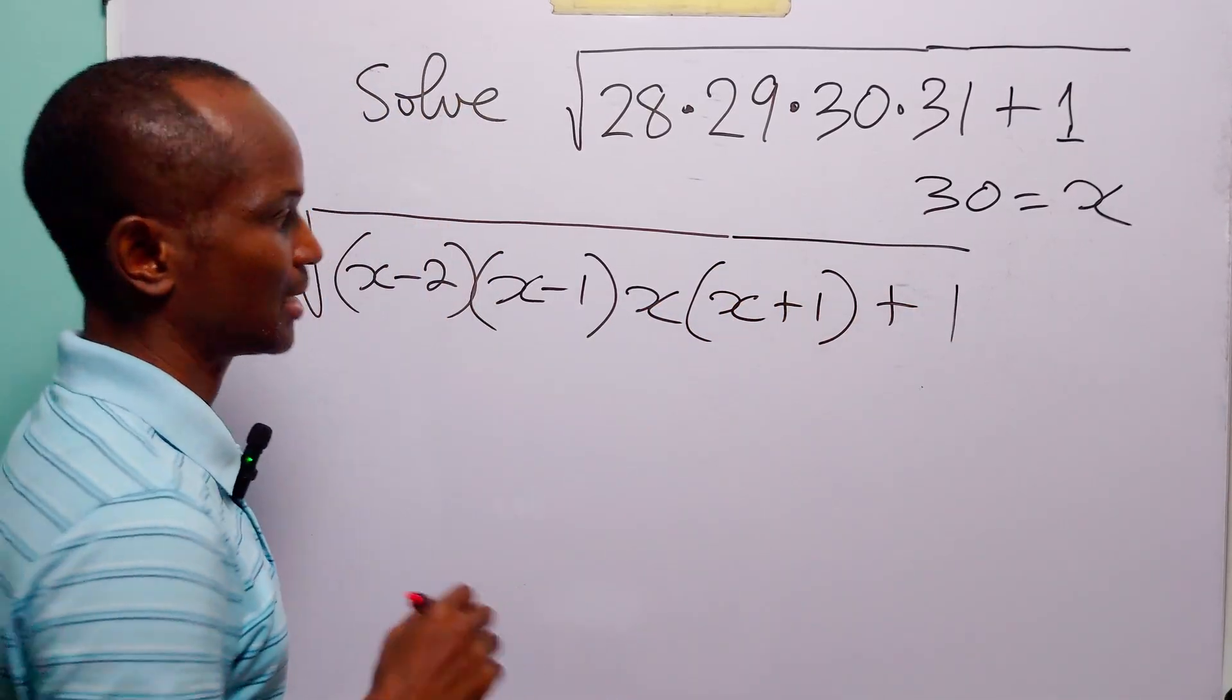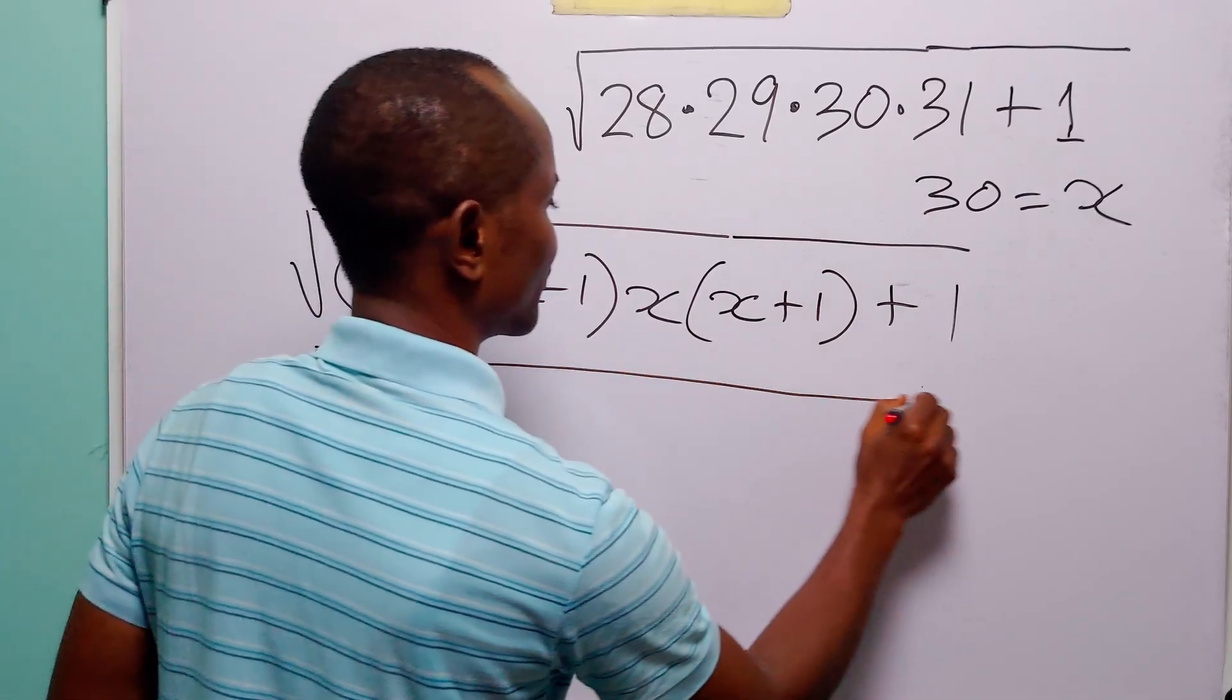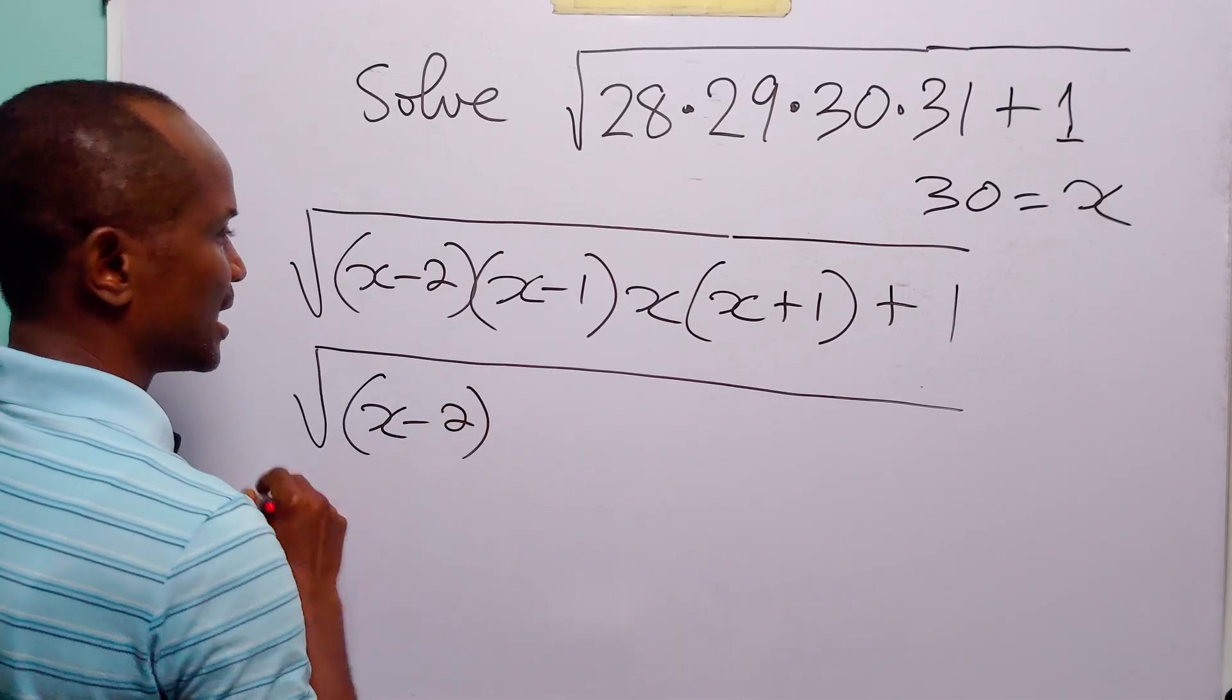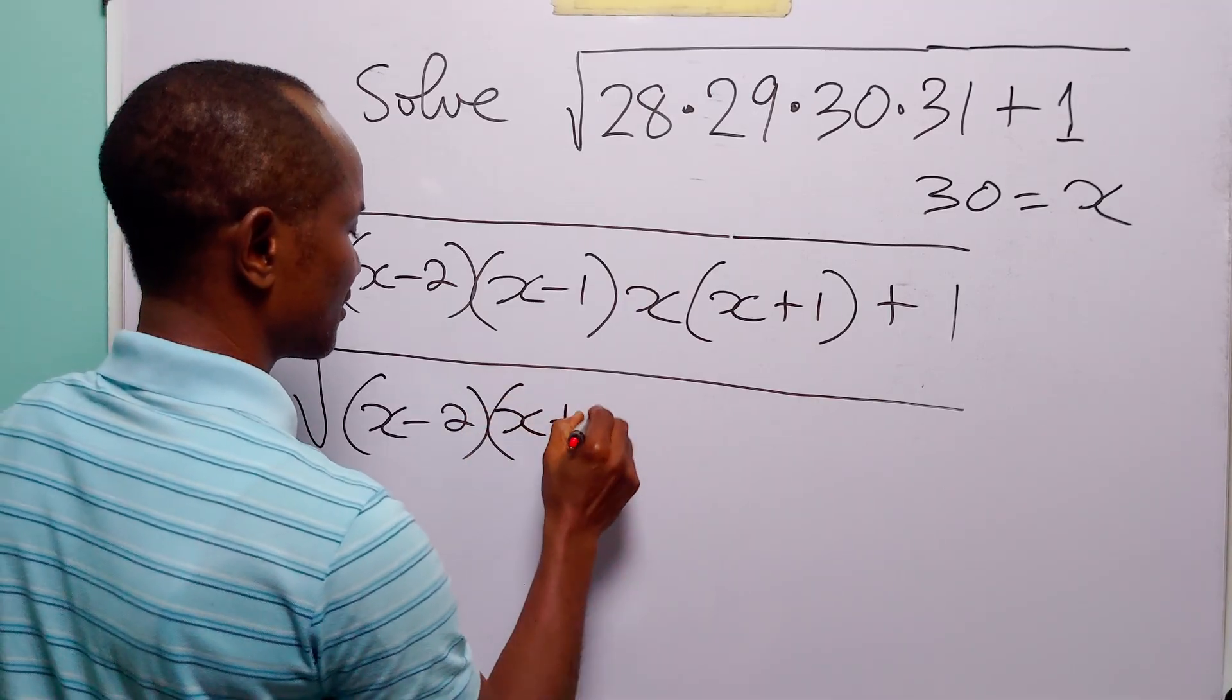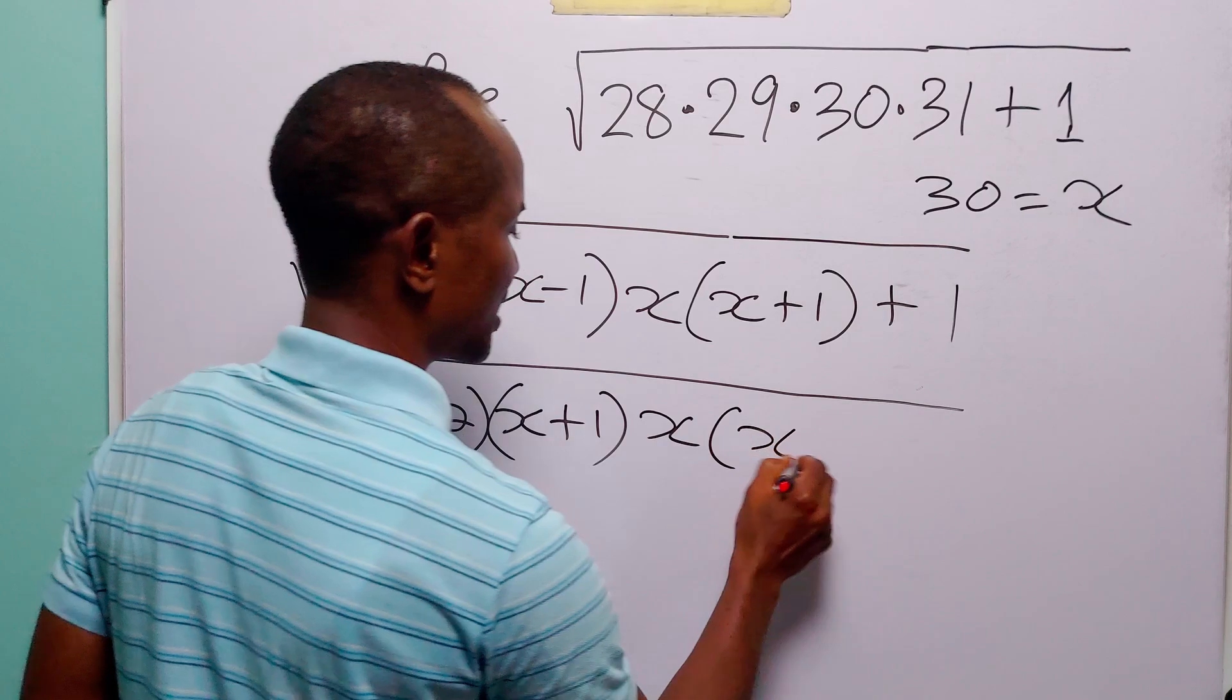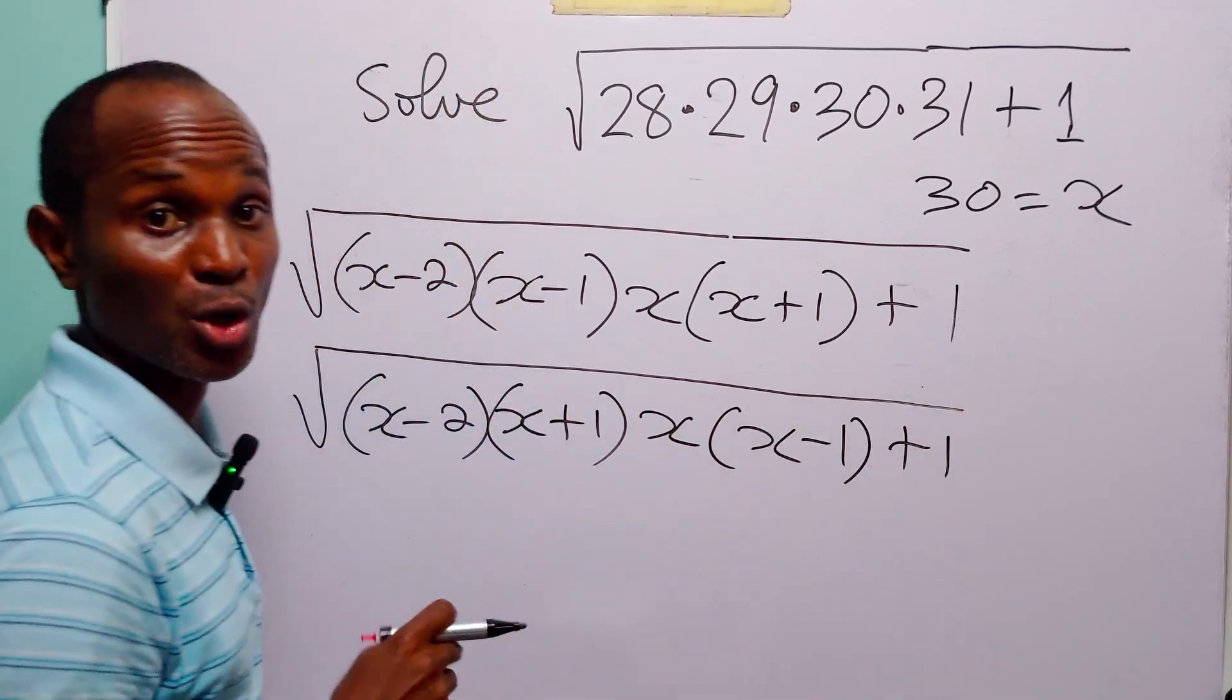Now let us rearrange this. Here we have x minus 2. Let us move this x plus 1 to sit next to x minus 2. So here we have x plus 1. We still have x here and we have x minus 1. Then of course we have x plus 1.